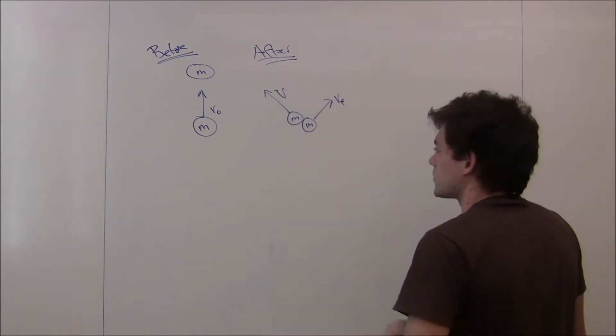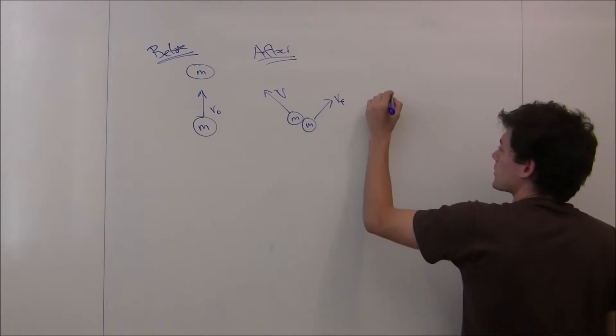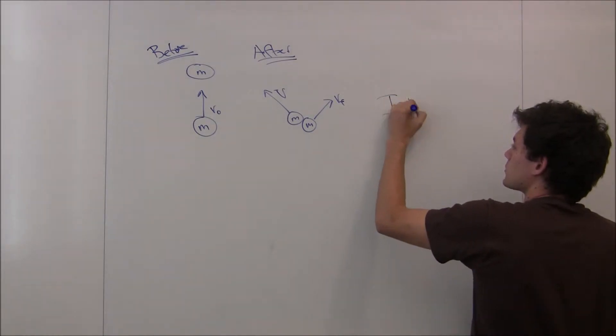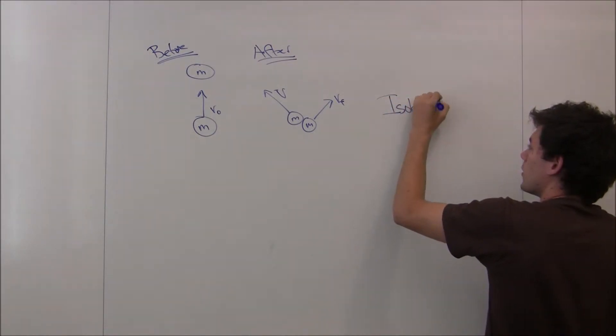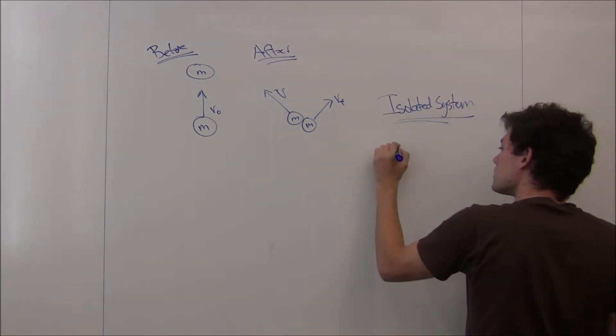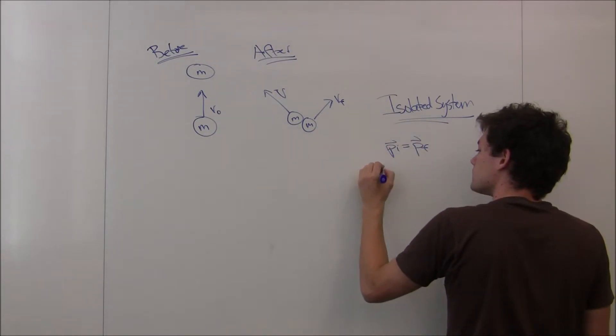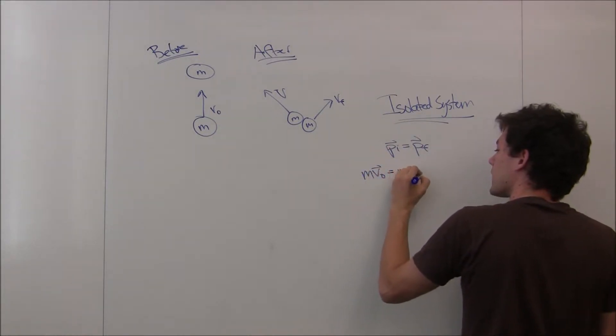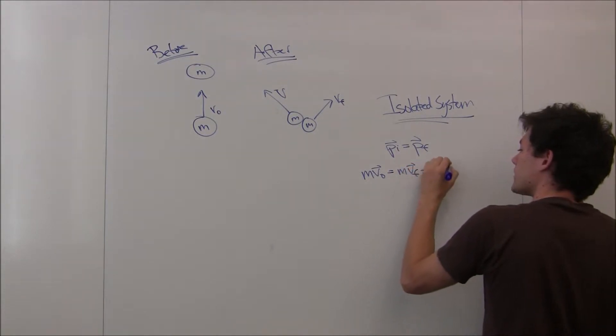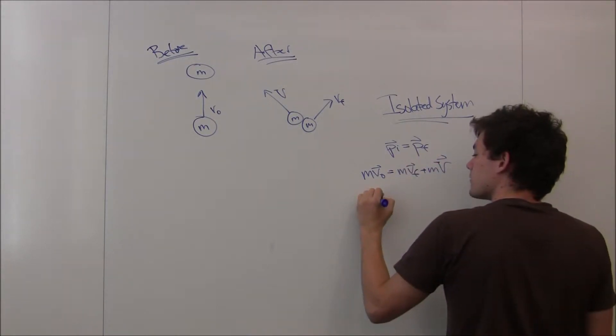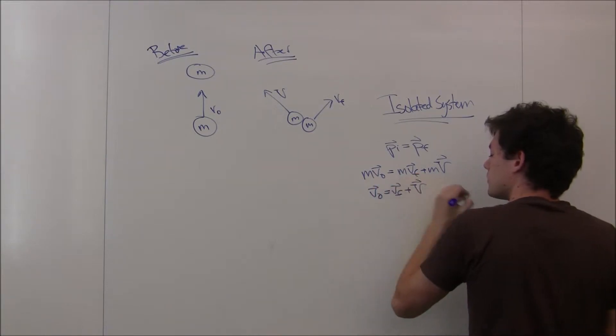And so now, all we have to do is conserve momentum. Since the two form an isolated system, there are no net external forces acting upon them. We know that p initial equals p final, which tells us that mv0 equals mv final plus mv, which tells us that v0 equals v final plus big V.